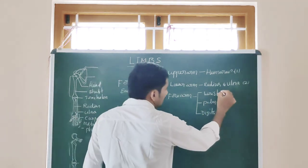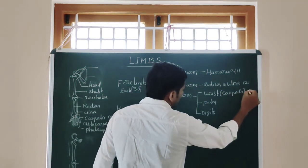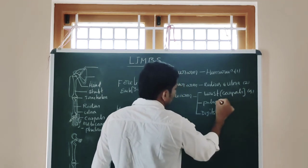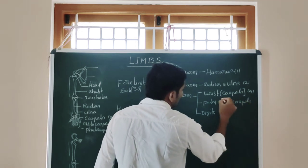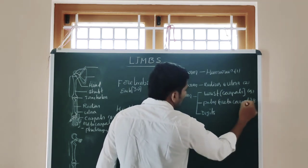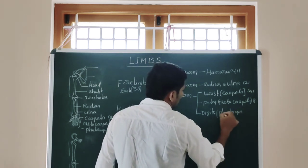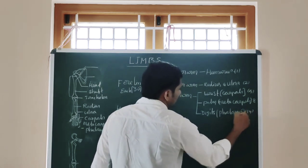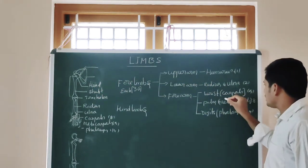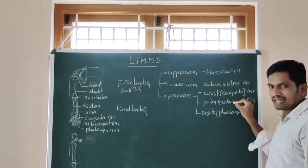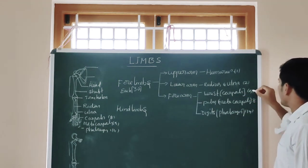Carpals are 8 in number, metacarpals are 5 in number, phalanges are 14 in number for each. Your wrist we call carpals, and metacarpals and phalanges.